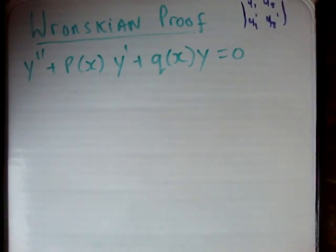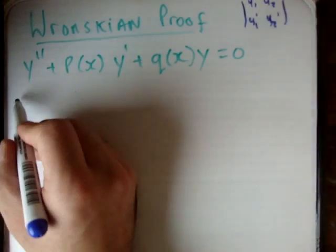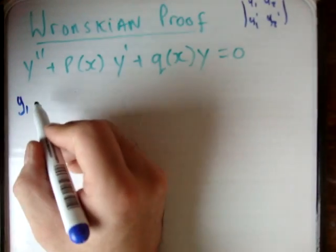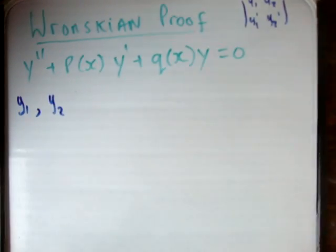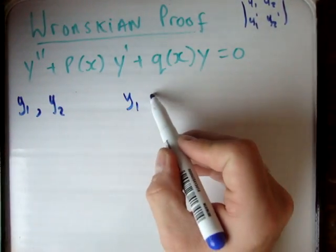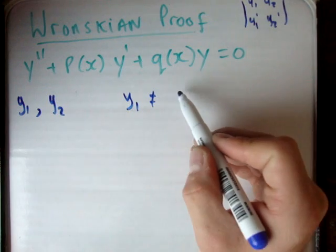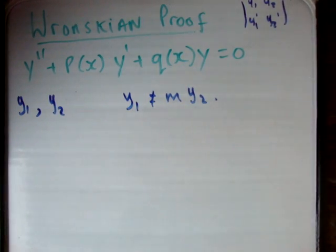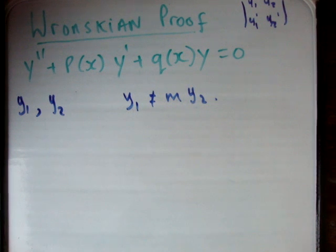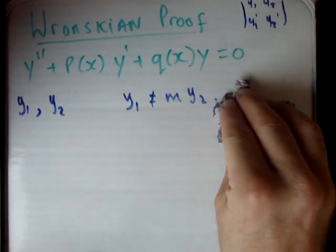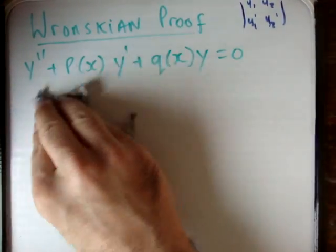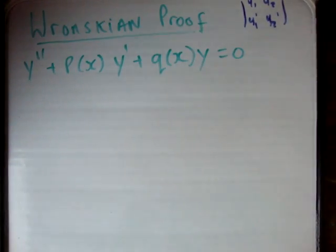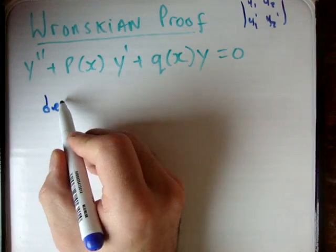The Wronskian tells you whether or not you have linearly independent solutions. So y1 and y2 are linearly independent solutions where y1 is not equal to a constant times y2. In other words, I can't multiply y2, one of my solutions, by a factor and get out another one. To show that something is linearly independent, you calculate the determinant of a matrix.